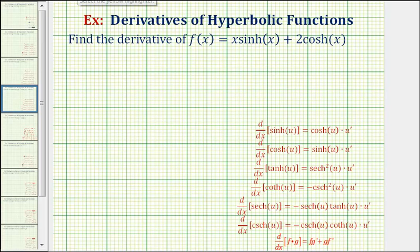If we take a look at our derivative formulas, we'll need the product rule, as well as the derivative formulas involving hyperbolic sine x and hyperbolic cosine x, which would be these two formulas here.